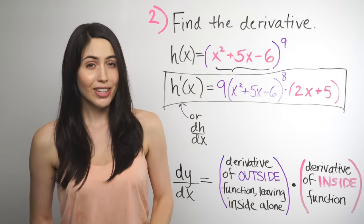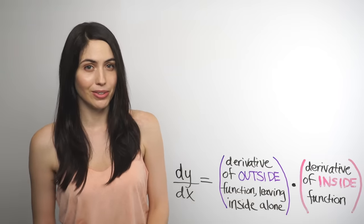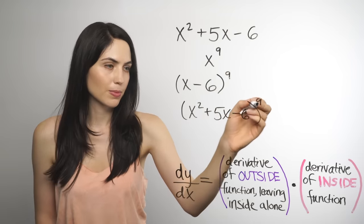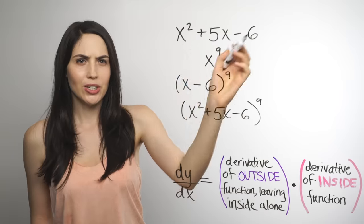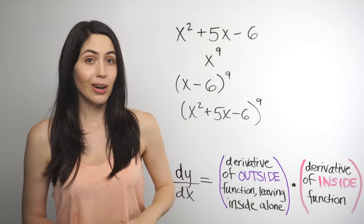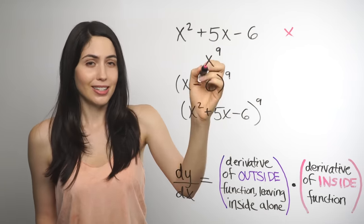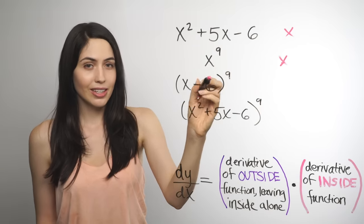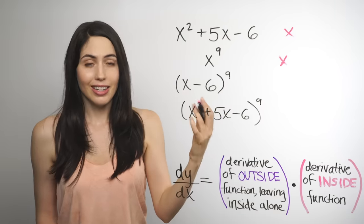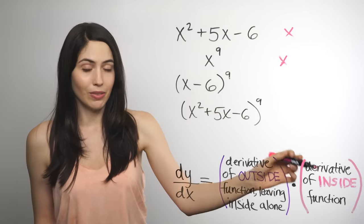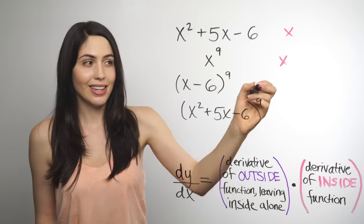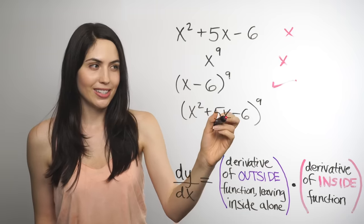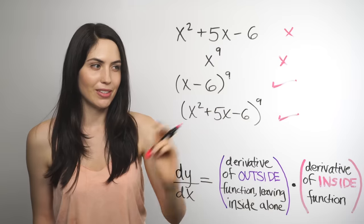Now let's do a quick lightning round of chain rule or no chain rule. x² plus 5x minus 6 alone? No — not a composite function. x to the 9th? No — not complicated enough. (x − 6)^9? Technically yes — the inside derivative of 1 won't matter much, but it's good policy. (x² + 5x − 6)^9? Definitely — it's a composite function begging you to use the chain rule.